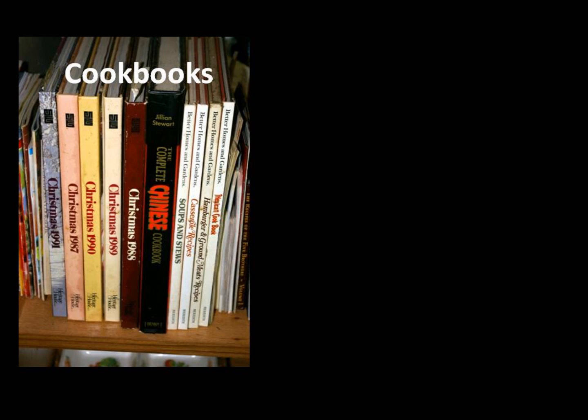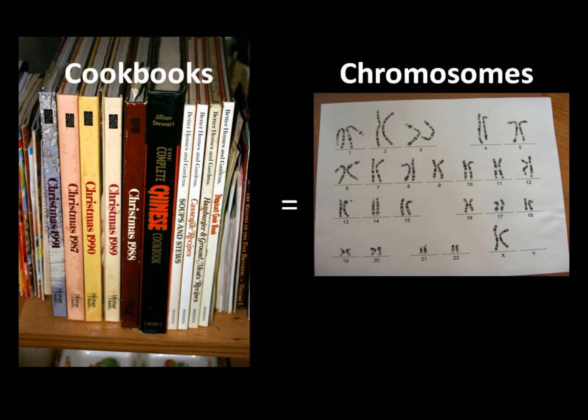Many of our old family recipes may be found in cookbooks. These contain recipes that have been passed down from generation to generation. We can compare these cookbooks to your own chromosomes, which are also passed down from generation to generation and are unique to you, just as recipes are sometimes unique to different families.